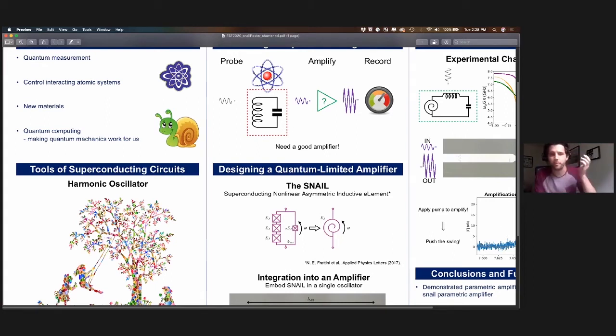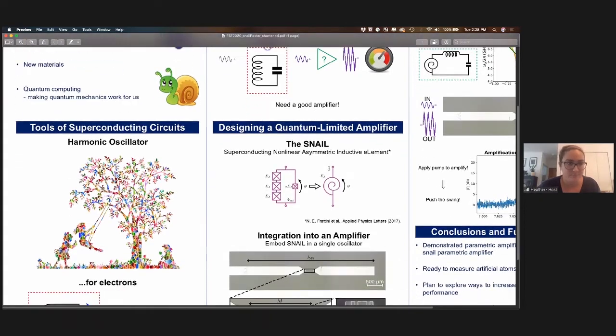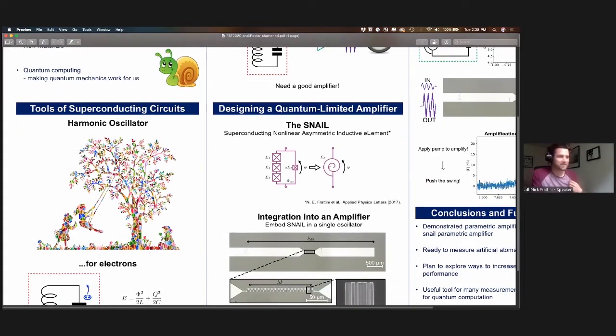Somebody said a spring bouncing back and forth is an oscillator. Yes, that's also a mechanical oscillator. What material is the superconductor? I definitely forgot to mention that. The material we use is aluminum, just like aluminum foil.